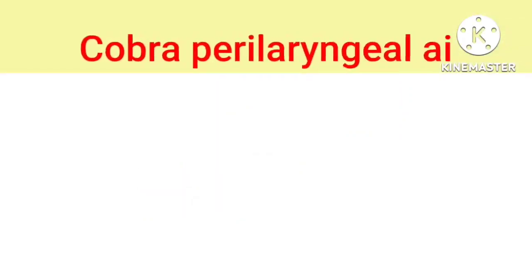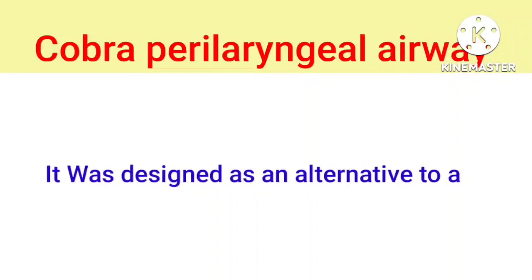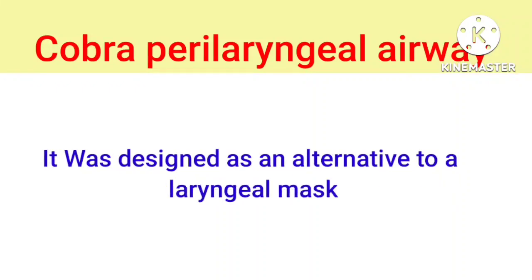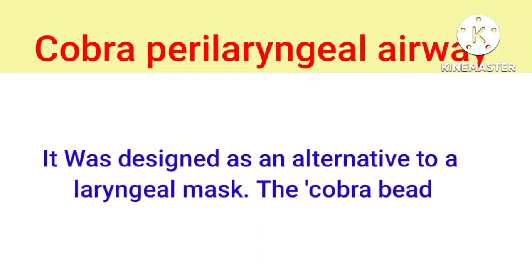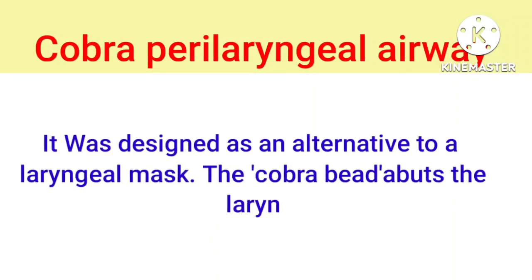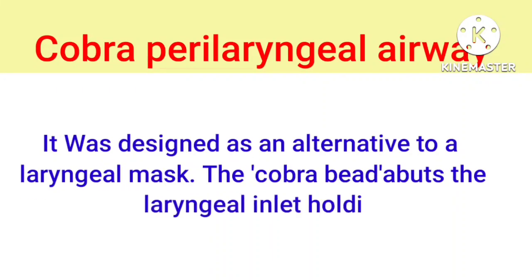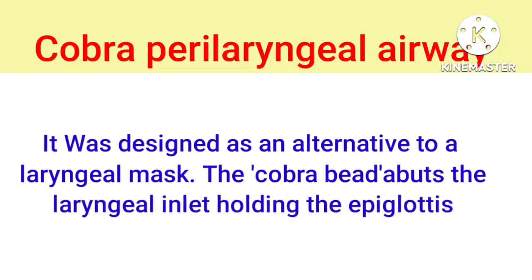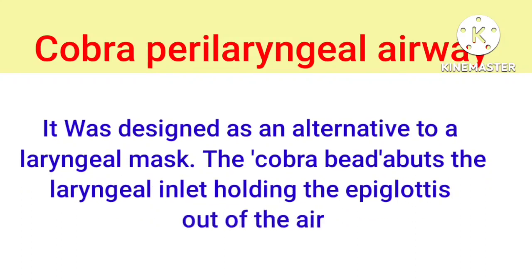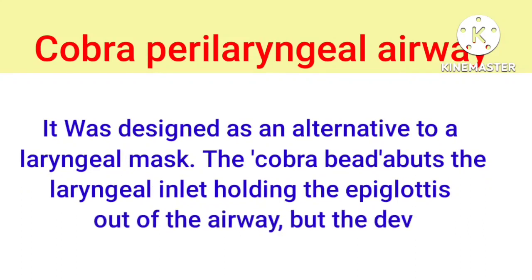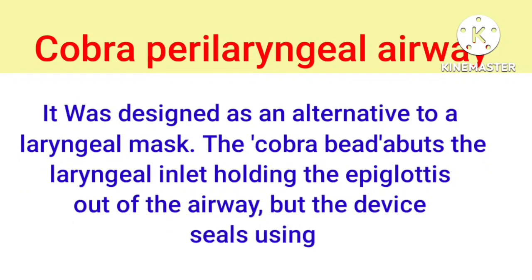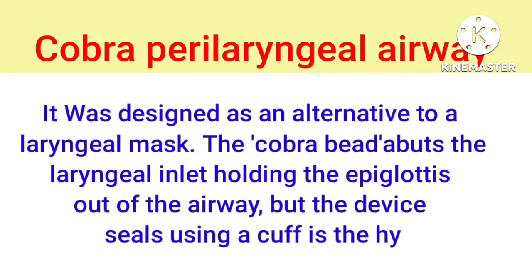The COBRA Paralaryngeal Airway was designed as an alternative to a laryngeal mask. The COBRA abuts the laryngeal inlet, holding the epiglottis out of the airway, but the device seals using a cuff in the hypopharynx.